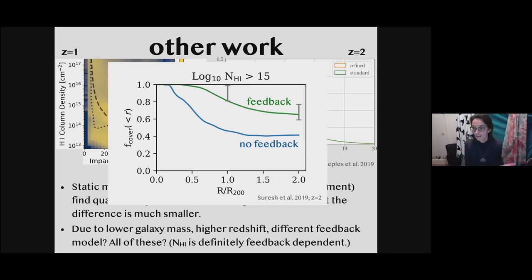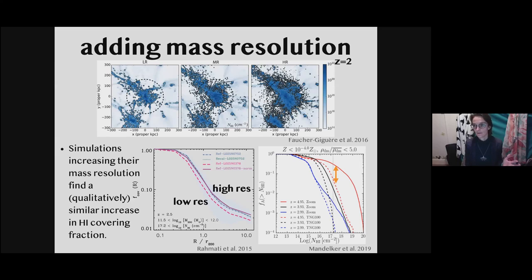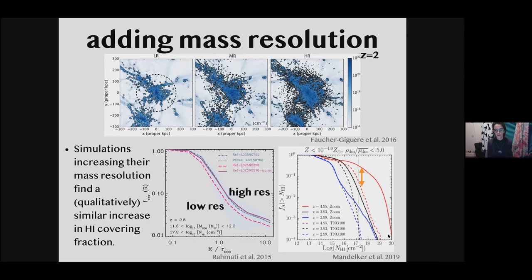You can also just increase mass resolution rather than doing specially CGM-refined simulations, at additional computational cost. This has been done at higher redshift, and the results should be similar at lower redshift — work from Mandelker and also from Emerick et al. show that every time you increase the resolution you end up with more cool gas, as a function of radius or covering fraction. Qualitatively this is all in agreement with each other.